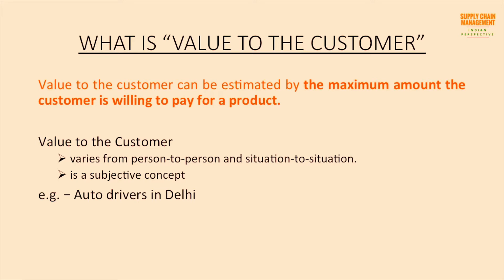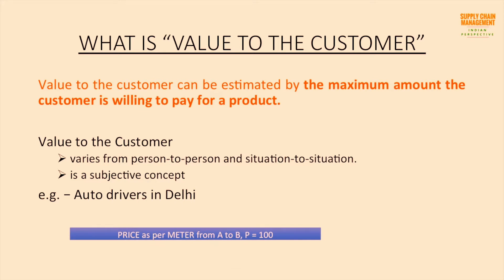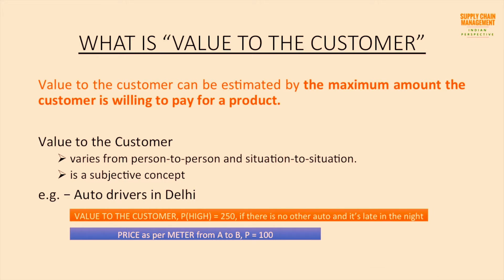Let me explain this concept using the example of auto drivers in Delhi. Say you have to go from point A to point B and as per meter value the driver should charge you rupees 100. To find out the maximum amount a person can be willing to pay, assume it's night time and there is no other auto available. The person can definitely pay more than 100 — even 250 rupees — depending upon their desperation.